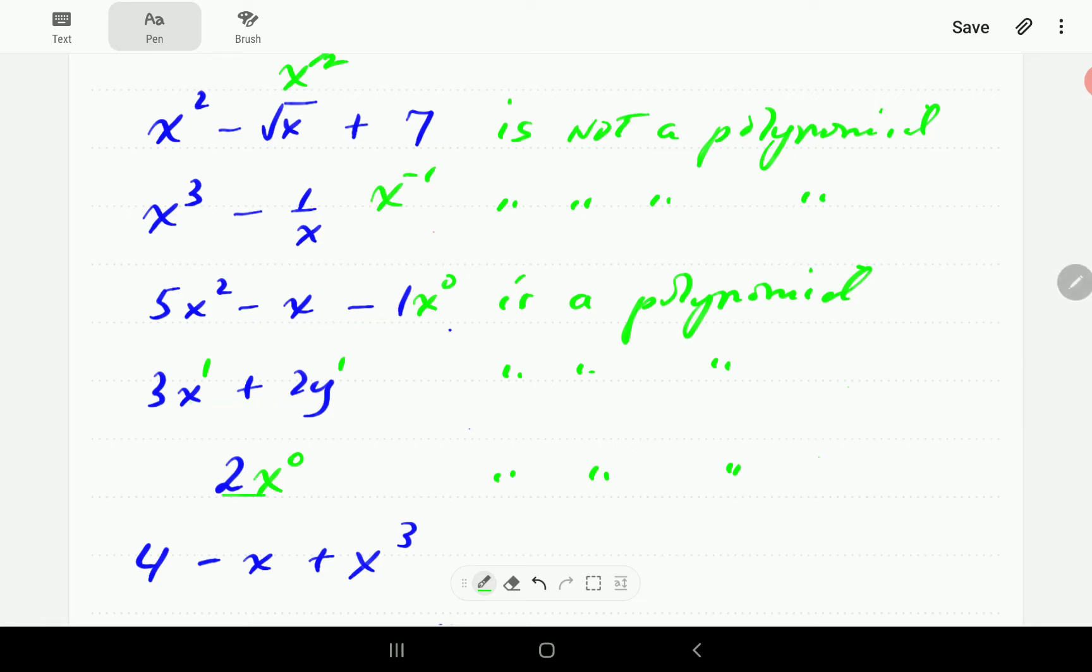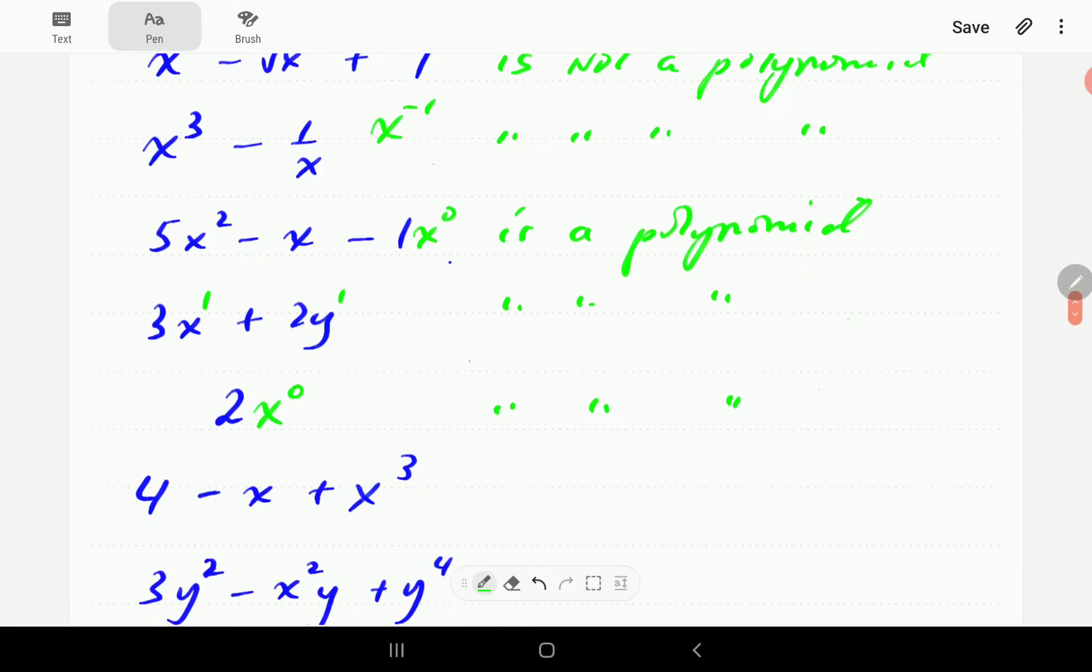Here we've got 3 terms, 2 terms here, 1 term here, and all these are polynomials. The main thing is that the exponents of the variables are non-negative integers.